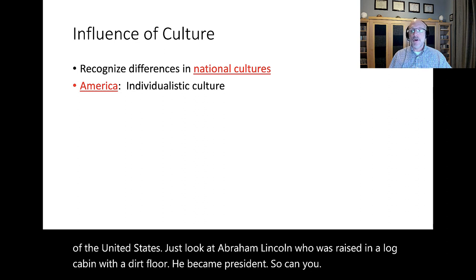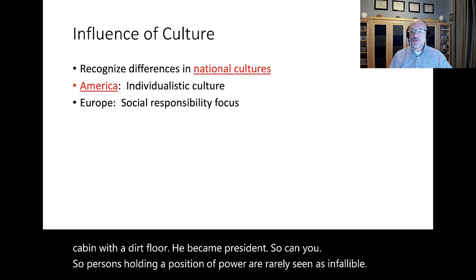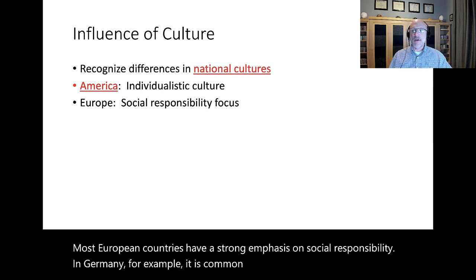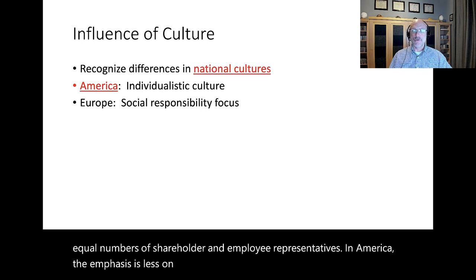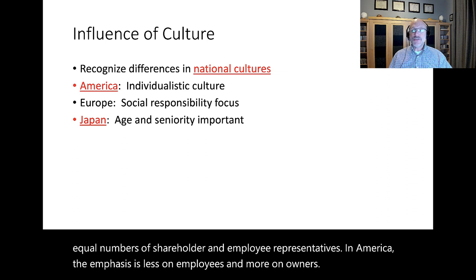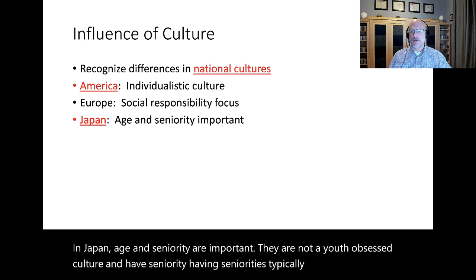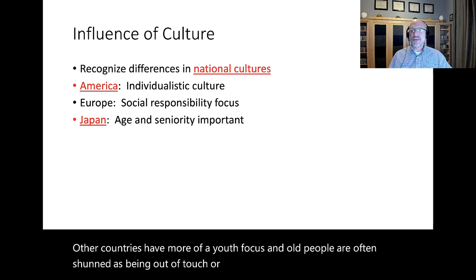Persons holding a position of power are rarely seen as infallible in the U.S. Most European countries have a strong emphasis on social responsibility — in Germany, for example, it is common for boards of directors to have equal numbers of shareholder and employee representatives, whereas in America the emphasis is less on employees and more on owners. In Japan, age and seniority are important — they are not a youth-obsessed culture and having seniority is typically recognized and respected. Other countries have more of a youth focus and older people are often seen as out of touch or irrelevant.